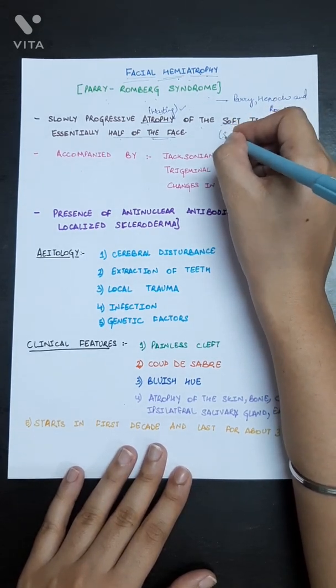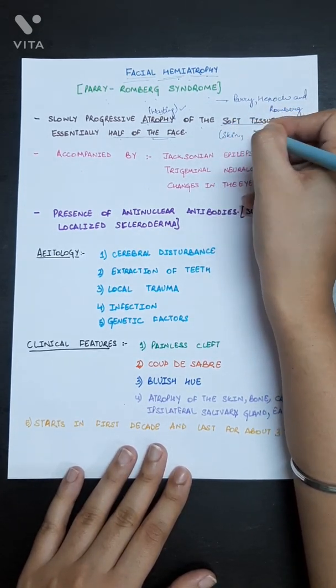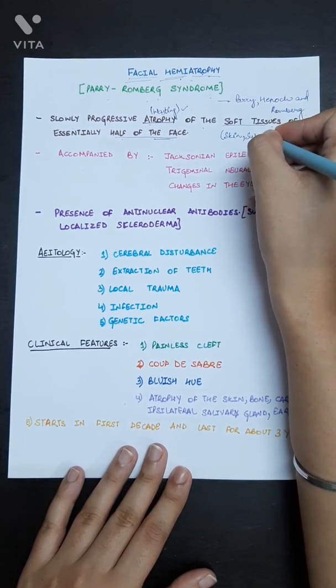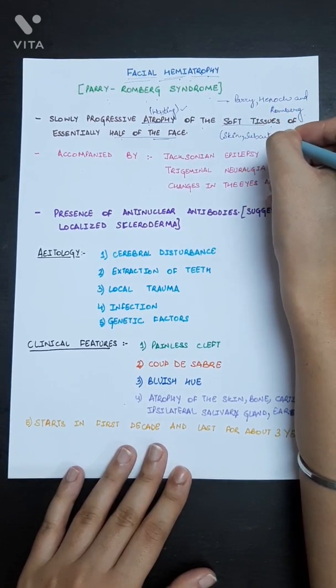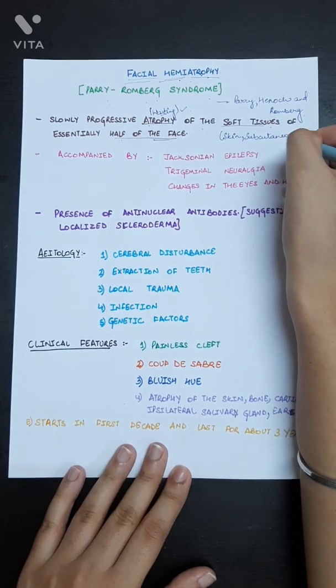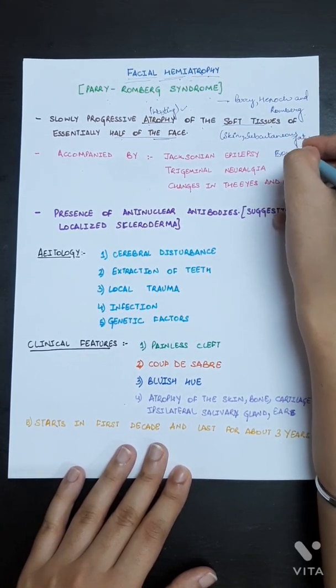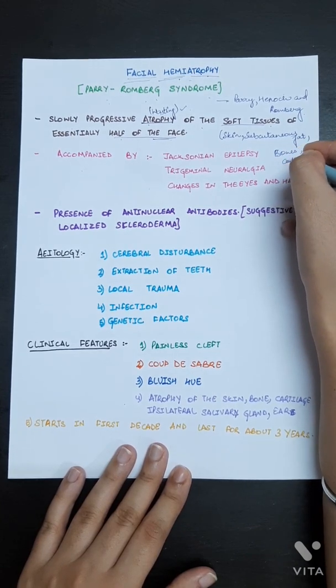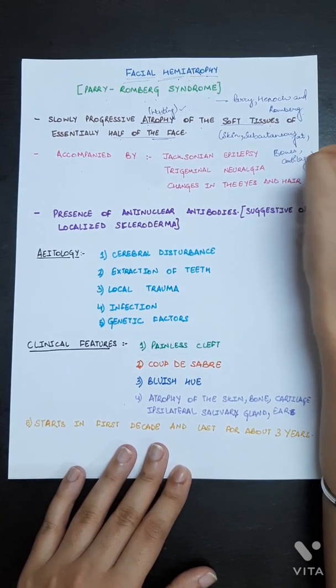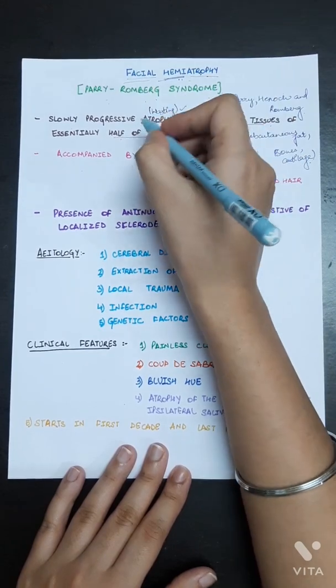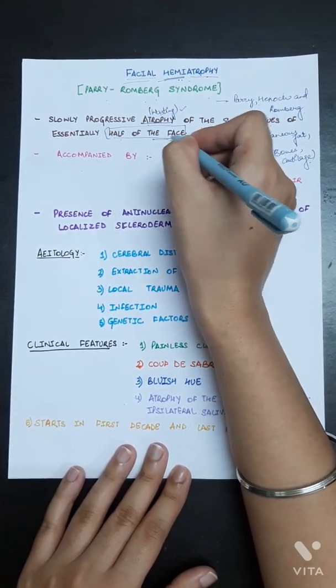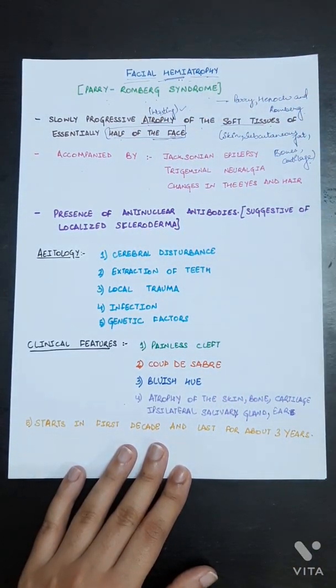Soft tissues such as skin, you can see the wasting or atrophy of skin, subcutaneous fat, and bones and cartilage also. As it is hemiatrophy, half of the face and even the neck may be involved in facial hemiatrophy.